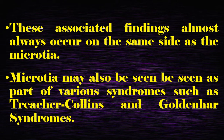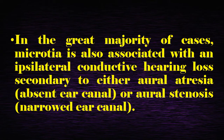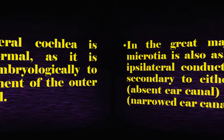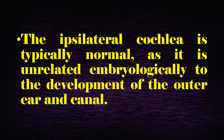Microtia may also be seen as part of various syndromes, such as Treacher Collins and Goldenhar syndromes. In the great majority of cases, microtia is also associated with an ipsilateral conductive hearing loss, secondary to either aural atresia or aural stenosis. It is important to keep in mind that the ipsilateral cochlea is typically normal, as it is unrelated embryologically to the development of the outer ear and canal.